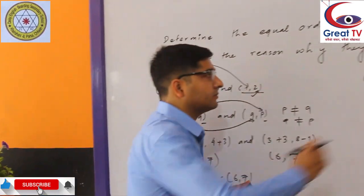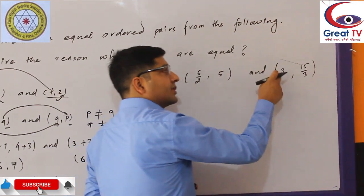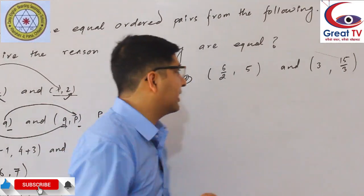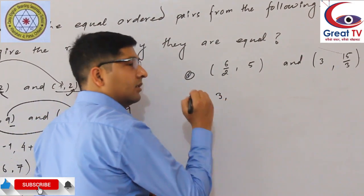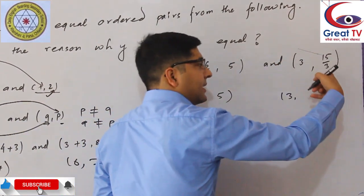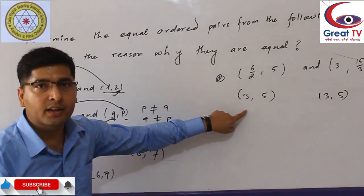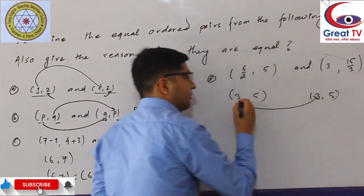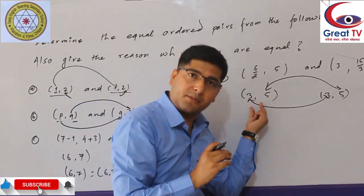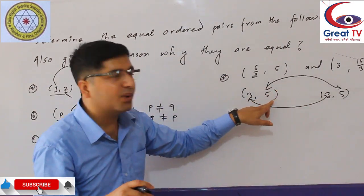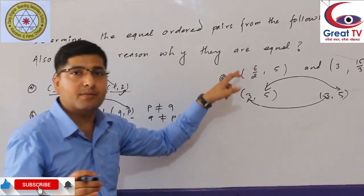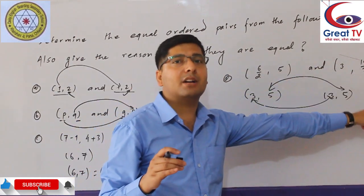Now the last question: (6÷2, 5) and (3, 15÷3). The x-component of the first is 6÷2 = 3, and y-component is 5. The x-component of the second is 3, and y-component is 15÷3 = 5. The x-components are equal (3=3) and y-components are equal (5=5). So (6÷2, 5) and (3, 15÷3) are equal ordered pairs.